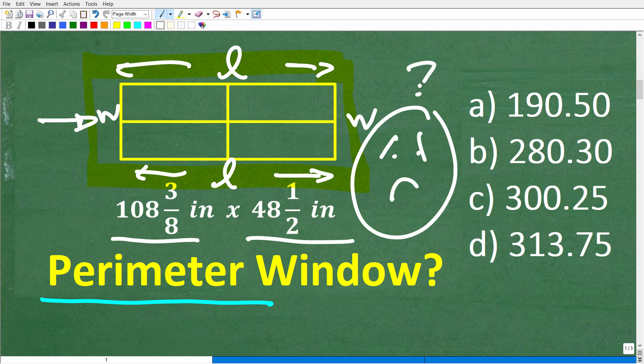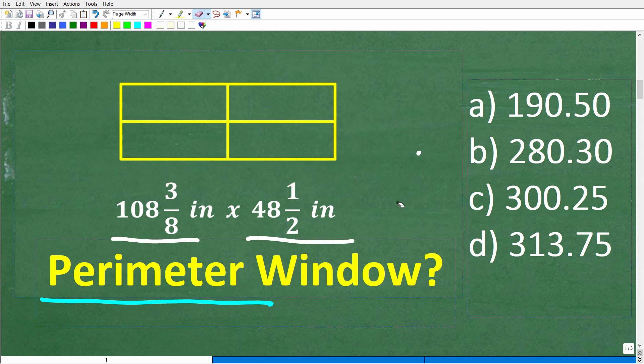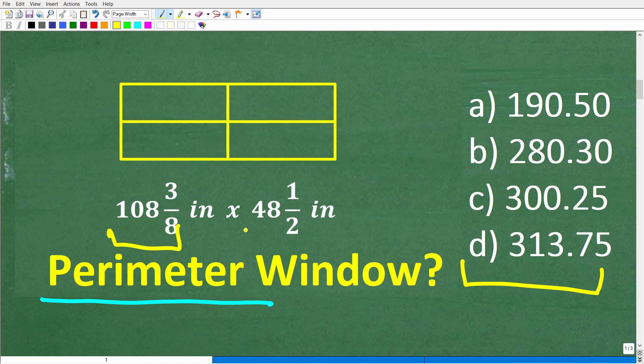Is there a better way to solve this problem? Well, actually, in this particular case, there is a nice, easy way to identify and select the correct answer here. Because we do have a multiple choice question, we can actually round these numbers right here to identify the right answer. Alright, so what am I talking about? Well, we have 108 and 3 8ths as our length. Let's just call that 100.